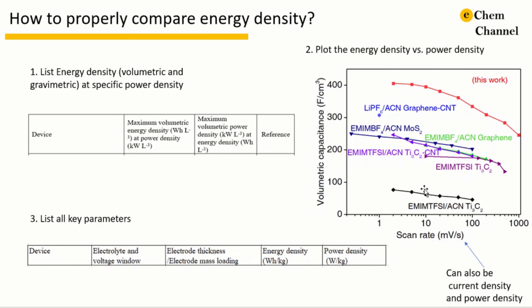The problem is that not all the literature reports the energy density at different scan rates or power densities. Method one and method two sometimes may also cause unfair comparison because the type of the device, the electrode thickness, and the mass loading of the active material strongly influence the energy and power density. So it will be better if all the parameters of the devices can be listed in one table for a clear and fair comparison.